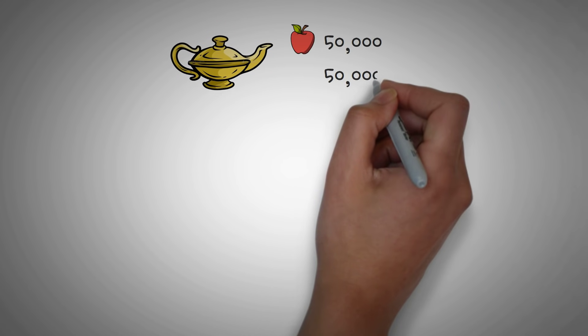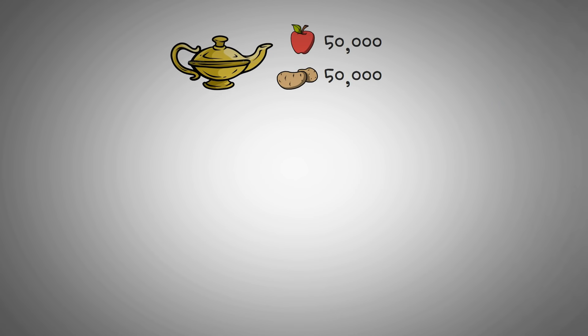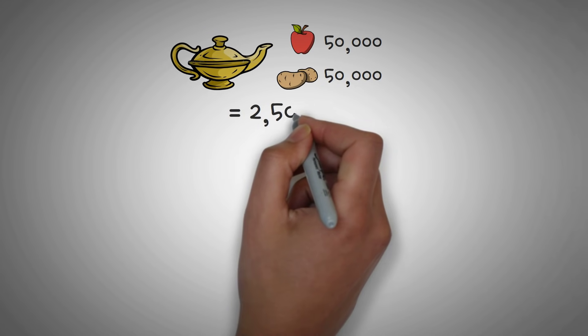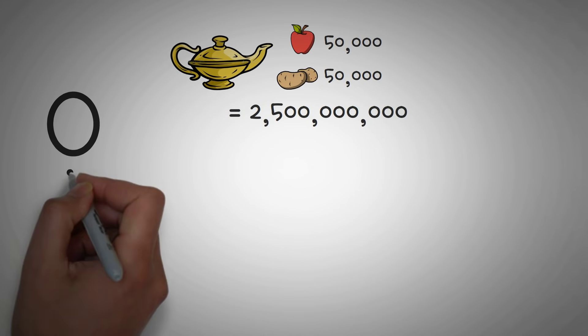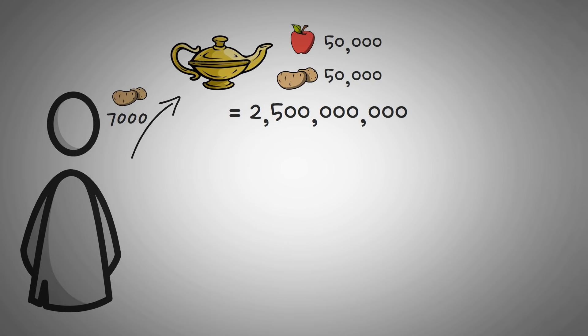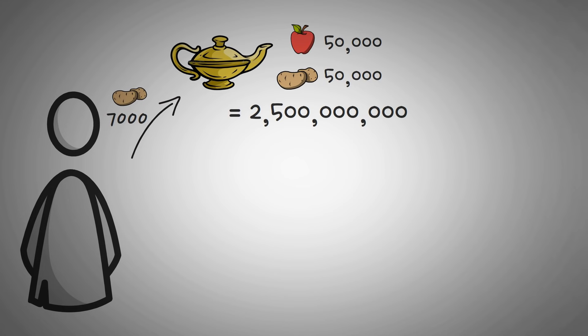Alright, so right now there are 50,000 apples and 50,000 potatoes. And the number of both of those must equal 2.5 billion when multiplied. So let's say a potato farmer comes along with 7,000 potatoes to trade, because they really want some apples. So he gives them to the genie, and he waits while the genie figures out how many apples to give him. So now we have 57,000 potatoes in the genie's lamp, but we need to know how many apples to give the potato farmer. So let's start with some math.